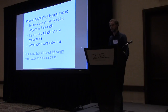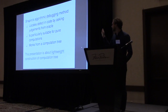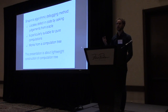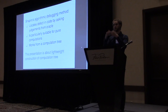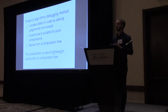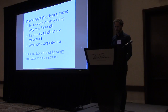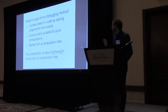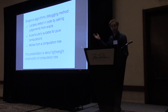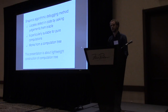One method to locate a defect in your code is called the algorithmic debugging method. It basically works by asking an oracle to judge some intermediate computations. This method is particularly suitable for pure computations, like you have in Haskell and other lazy functional languages. The data structure it works from is a computation tree. One of the issues with this method is that it has been around for some time, but it's not used that much, and one of the reasons is that it's very hard to actually get such a computation tree.